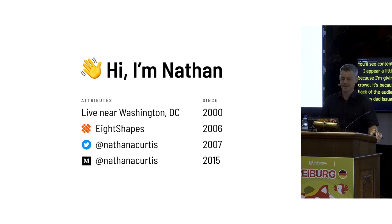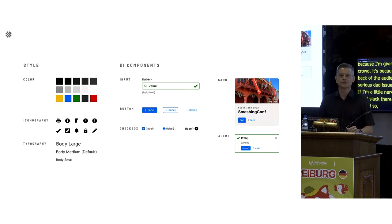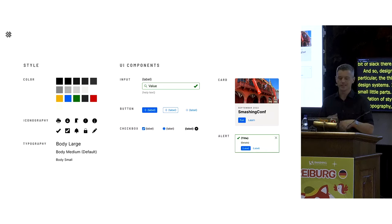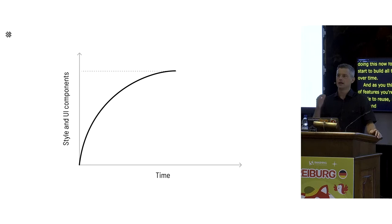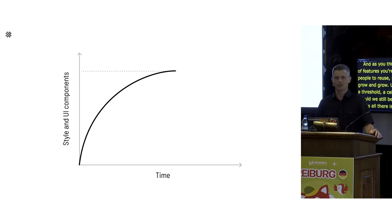Design systems, and in particular the things we make in design systems, all start with small parts. You build a foundation of style — color, typography, iconography — then thread that through the smallest parts like buttons, checkboxes, and inputs, and you start making bigger things like cards and alerts. Teams have been doing this for years, building up their catalog, until you reach a threshold: should we still be making more stuff? Is this all there is? We made Button and a few other things — are we done?